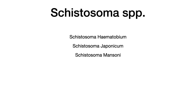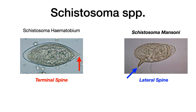There are three schistosoma subtypes: schistosoma hematobium, schistosoma japonicum, and schistosoma mansoni. On USMLE and COMLEX, the only thing you need to know about differentiating these subtypes is where the spine is located between hematobium and mansoni. Schistosoma hematobium has a terminal spine marked by the red arrow, whereas schistosoma mansoni has a lateral spine marked by a blue arrow.